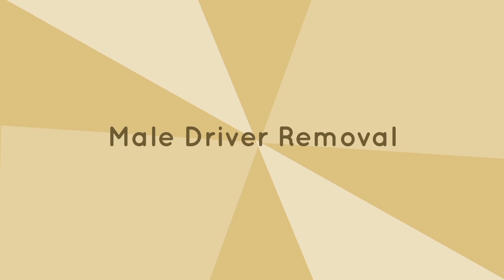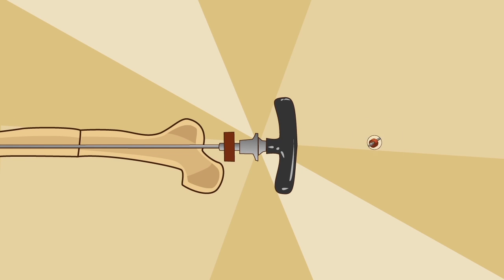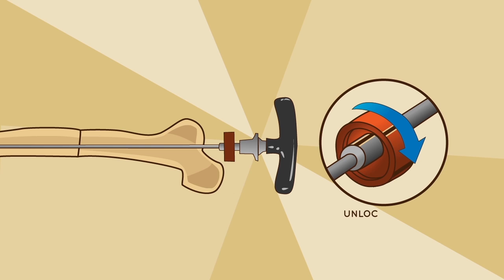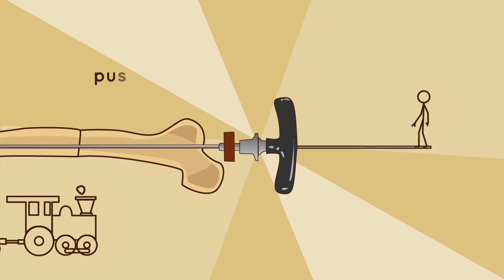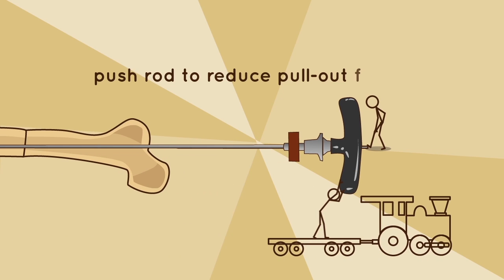Male driver removal. Unlock the male by rotating the eccentric ring to the unlocked position before removing the male driver. Removal of the male driver is done with the assistance of the pushrod PSR-100 to reduce pull-out forces on the nail fixation while the driver is pulled back.